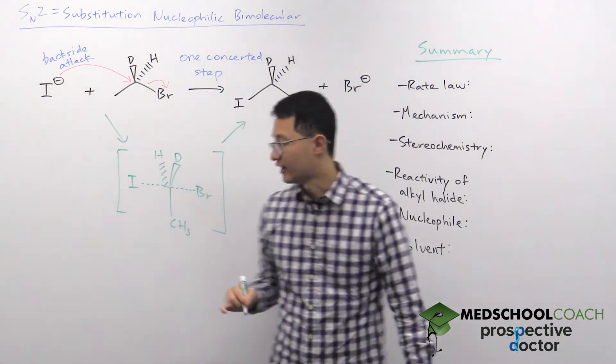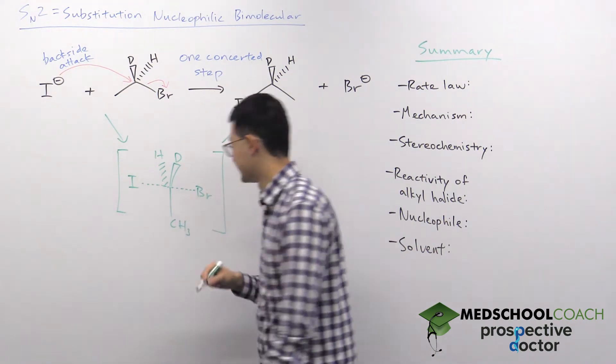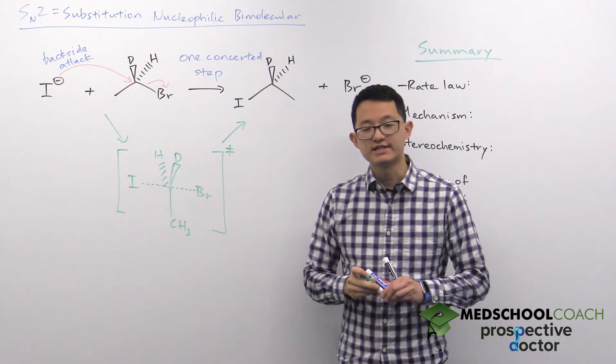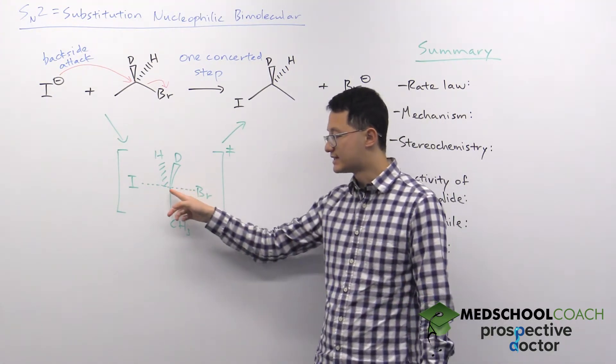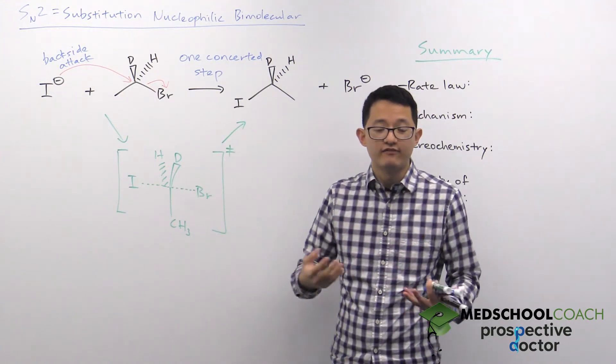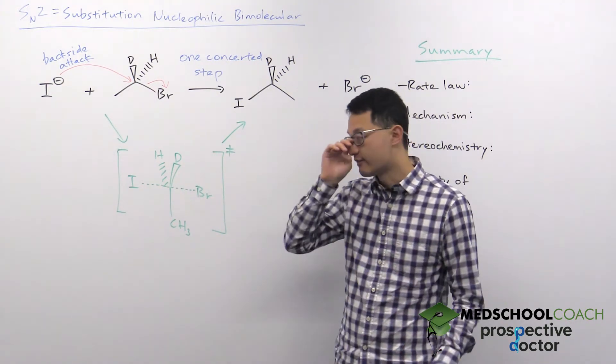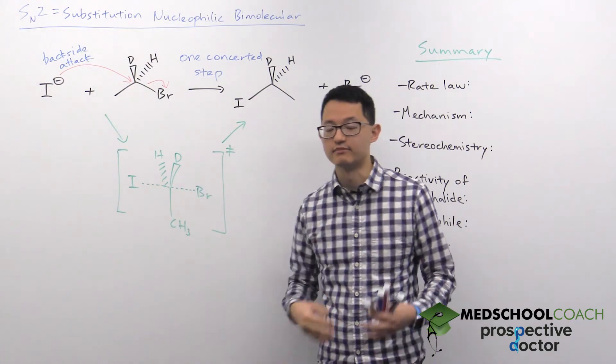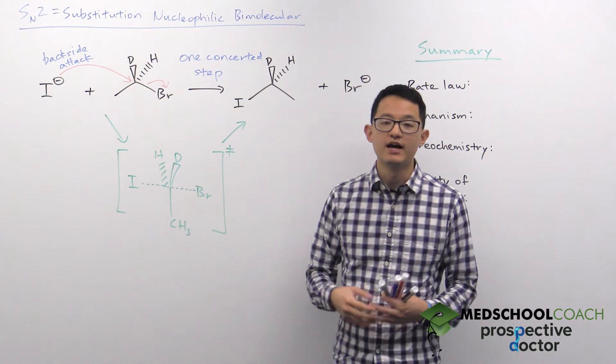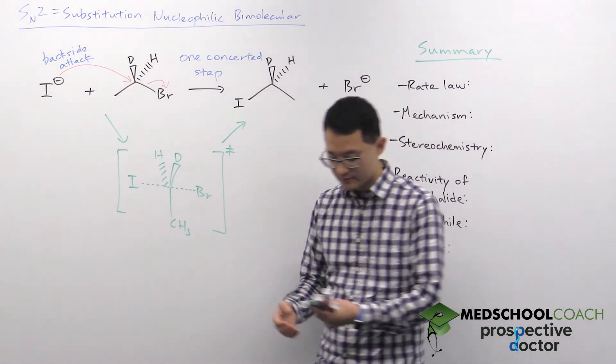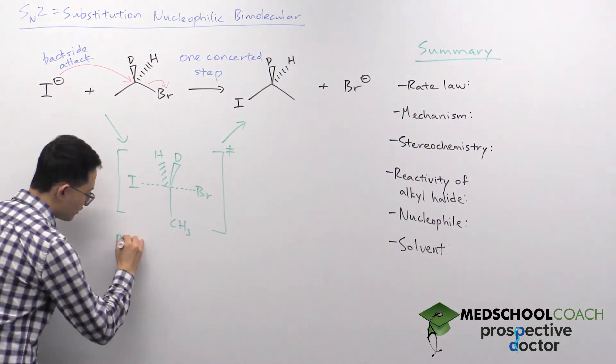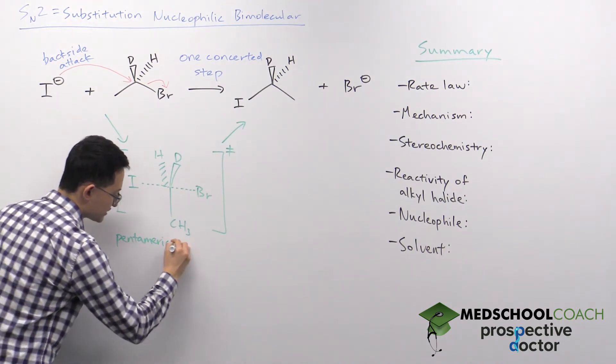You can see here our transition state, which we denote with the double dagger symbol on the top right within our brackets. What's interesting about this transition state is you can actually see this central carbon is connected with five different groups. It's true that this bond is in the middle of breaking and this bond is in the middle of forming, but this transition state does have an atom associated with five substituents. As a result, it has a special name. This transition state is called the pentameric transition state.